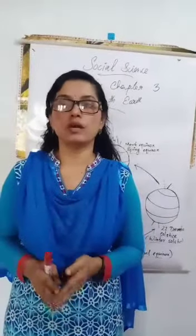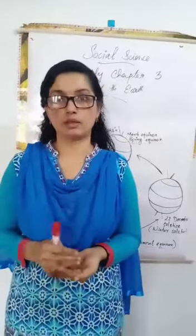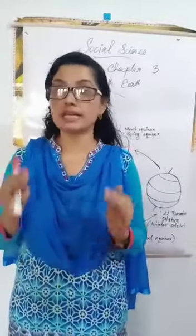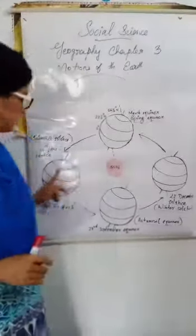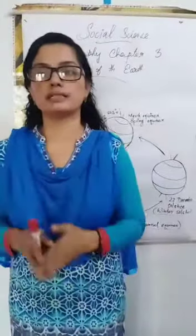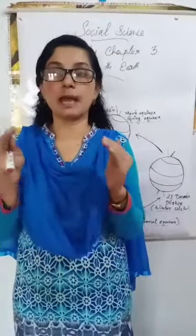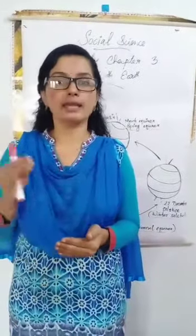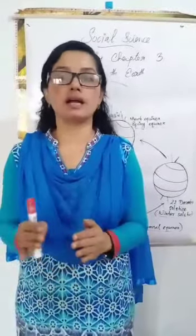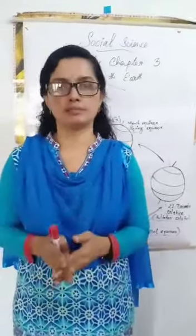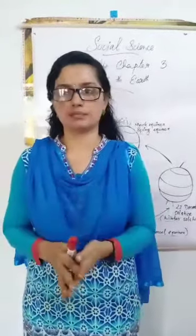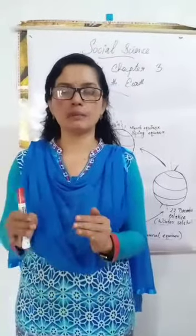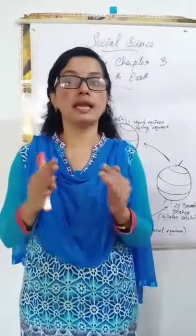On 21st June, the Sun is overhead at the Tropic of Cancer. This is called the Summer Solstice. The Sun provides maximum heat, and we have the longest day and shorter nights. The areas beyond the Arctic Circle have daylight for six months at this time.